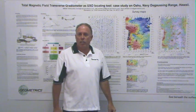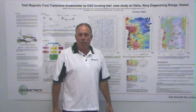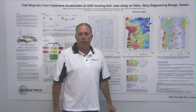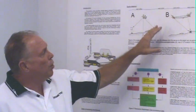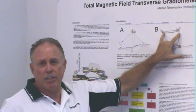This was a project funded by the US Navy for locating UXO in Pearl Harbor. The system comprises two optically pumped cesium vapor magnetometers.